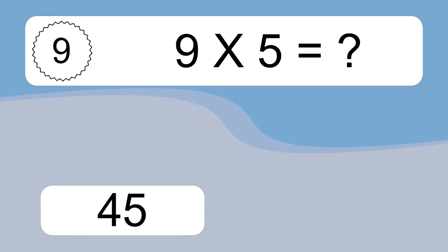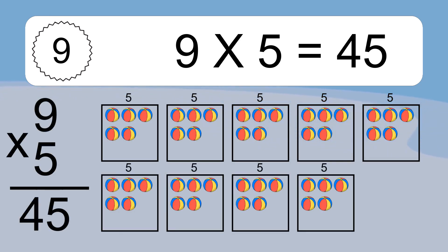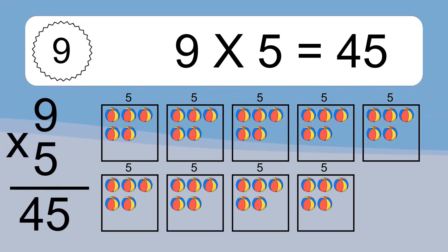Nine times five equals what? Nine times five equals forty-five.